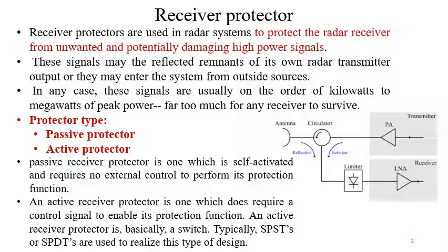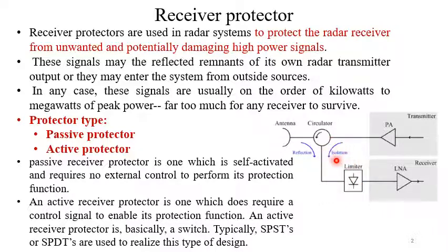Protectors are of two types: the classic protector and the active protector. Consider the transmitter power amplifier — the final stage power amplifier — with a circulator acting as a duplexer. The antenna receives echo power from the target, and this small amount of power is switched by the circulator toward the receiver path. However, a portion of the transmitter power may leak through to the receiver, depending on the isolation provided by the circulator.